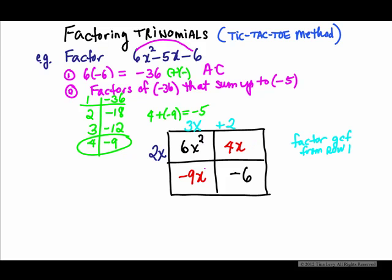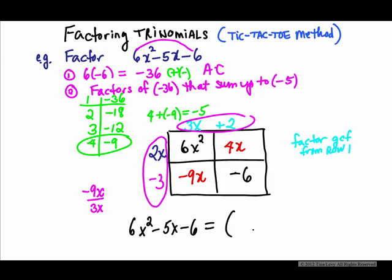We are going to use this column. And sure enough, we had that the 2x times the 3x gave us the 6x². But now we're going to think -9x divided by that 3x. And surely we get that is -3. And when we're finished, what we have out here are the factors. Therefore, what we can say is that 6x² - 5x - 6 can be factored.